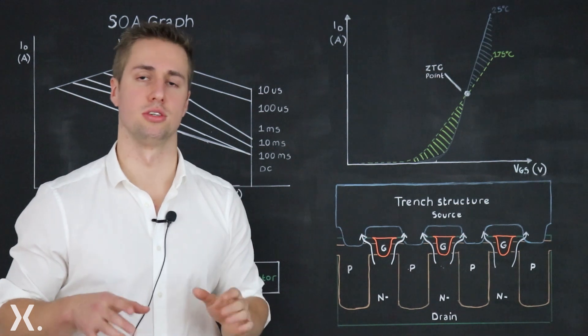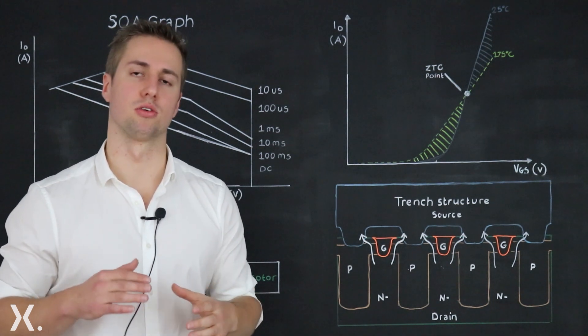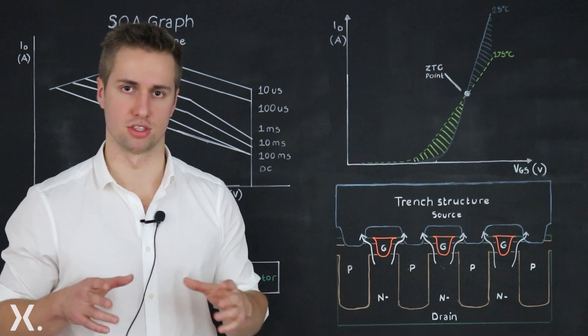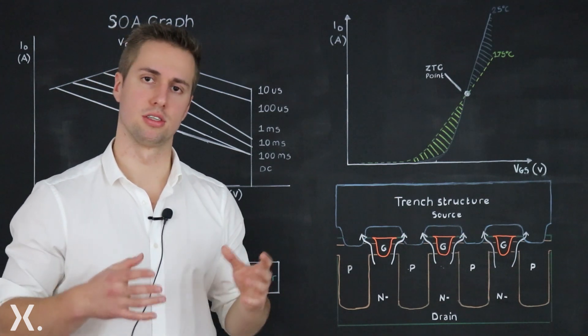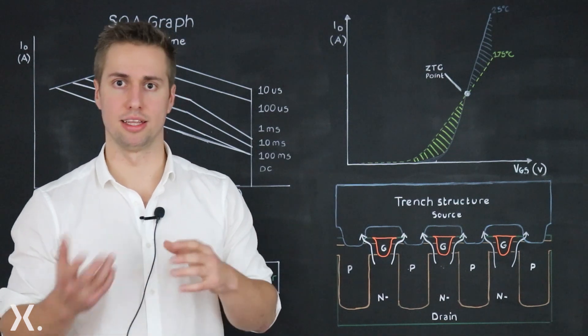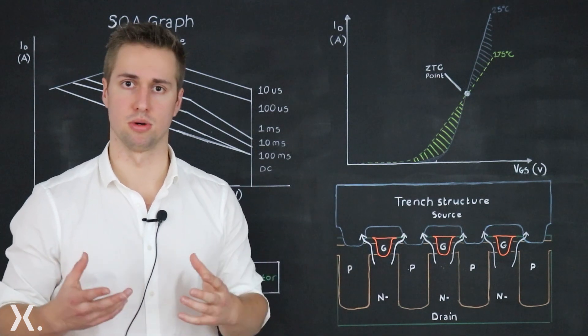Take into consideration that a silicon die doesn't have a completely uniform threshold voltage across it. Some areas will have lower threshold voltages than others. What this means is that some spots will heat up faster than others creating hot spots.